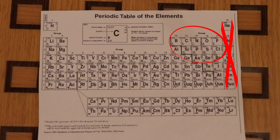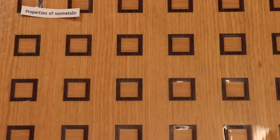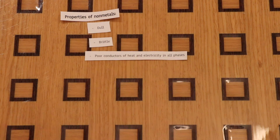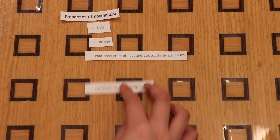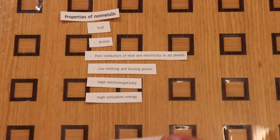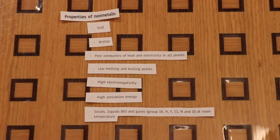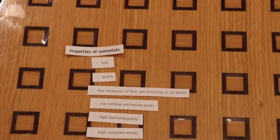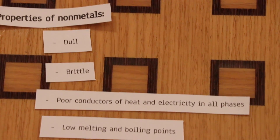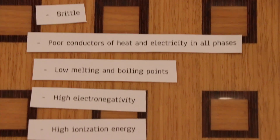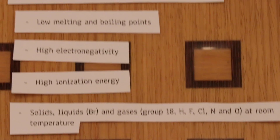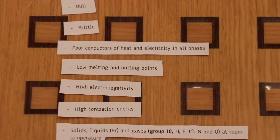Properties of non-metals include being dull, brittle, and poor conductors of heat and electricity in all phases. They have low melting and boiling points, high electronegativity, and high ionization energy. Non-metals can be found as solids, liquids, and gases. An example of a liquid is bromine; gases include all of Group 18, hydrogen, fluorine, chlorine, nitrogen, and oxygen — all at room temperature.